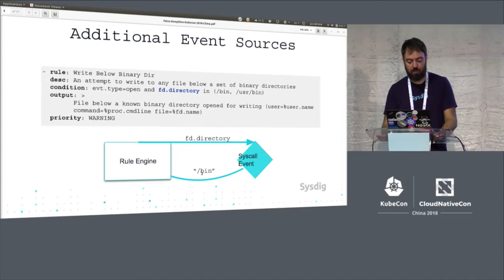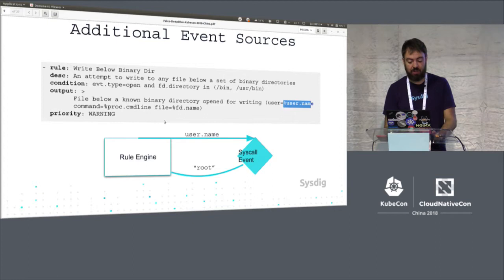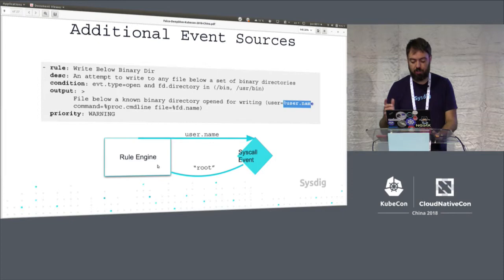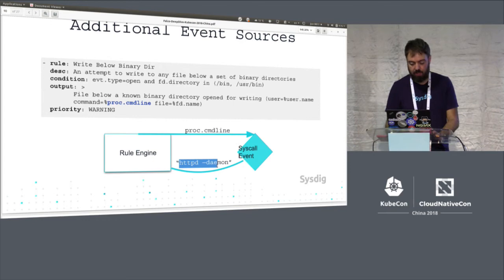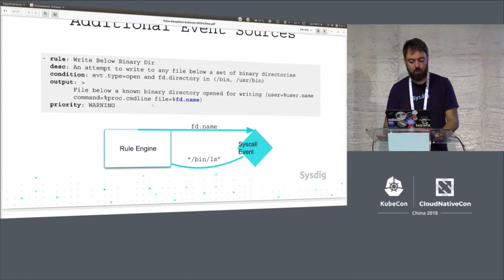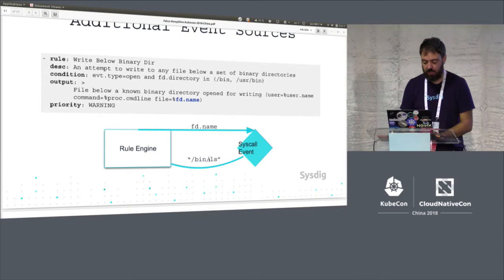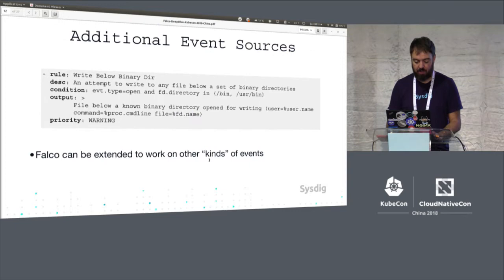The rule engine first gets all events of type 'open', then from those filters for ones where the file or directory is in /bin, and if that matches it builds the output using placeholders to retrieve different information from the event — like the username, which was the process (maybe an HTTP server like Apache), and which file was modified. So if it was /bin/ls, probably someone was trying to install a rootkit or something under that binary file.